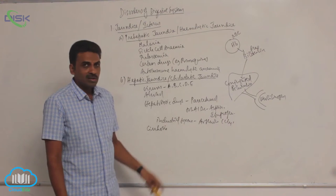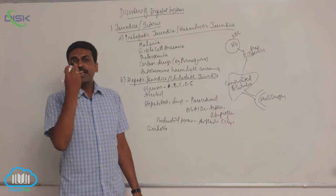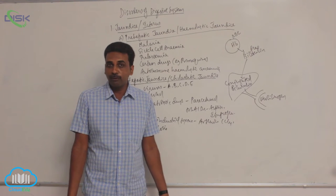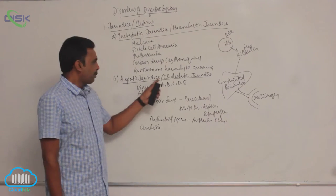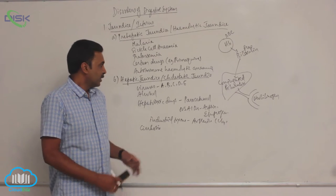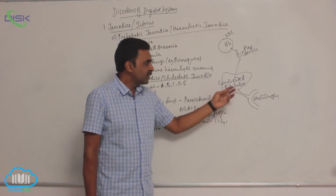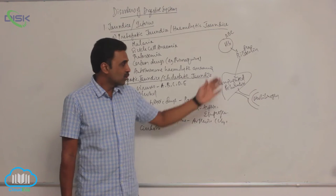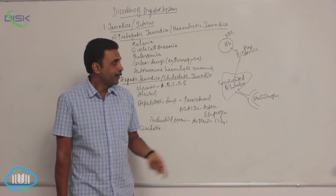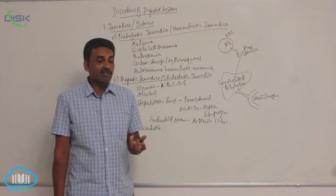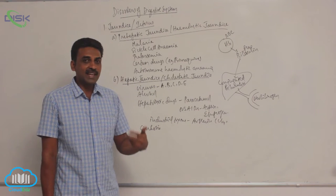Alcohol causes damage to the liver and can also cause liver cancer. When we take alcohol (ethanol, C₂H₅OH), the liver tries to collect and detoxify it. Ethanol is first converted into acetaldehyde, which is toxic and poisonous. Acetaldehyde is later broken down into carbon dioxide and water, but in the process it damages liver cells. In pre-hepatic jaundice the elevated bilirubin is free bilirubin, whereas in hepatic jaundice it is conjugated bilirubin that is elevated in blood.